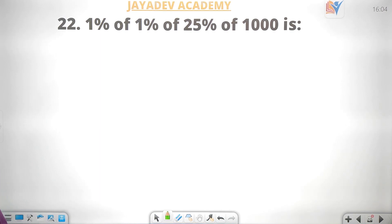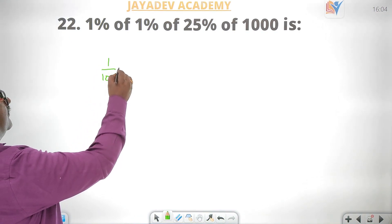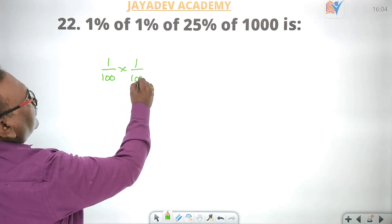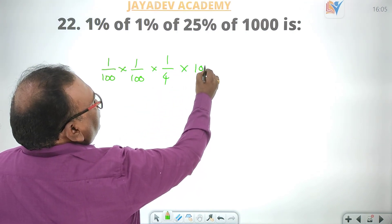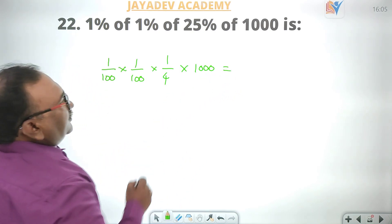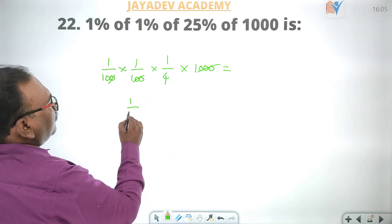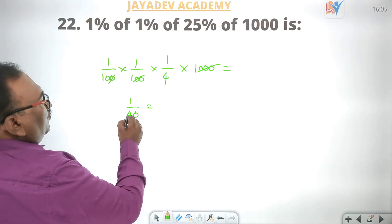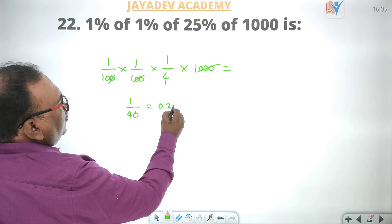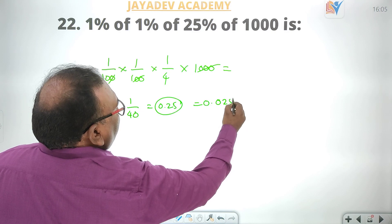22nd problem: 1% of 1% of 25% of 1000. That is 1 by 100, into again 1%, into 25% which is 1 by 4, into 1000. Three zeros cancel, so 1 by 40. The answer is 0.025.